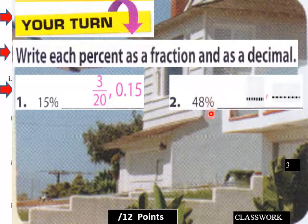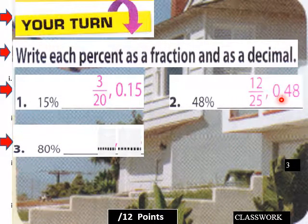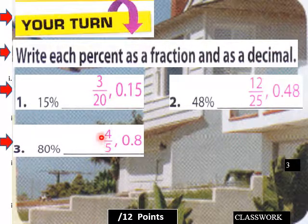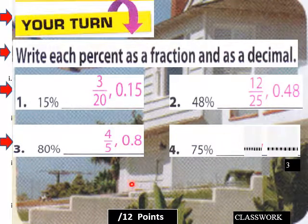48% as a fraction would be 12 over 25, or 0.48 as a decimal. And then 80% as a fraction would be 4 over 5, and 0.8 as a decimal. 75% as a fraction would be 3 fourths, or 0.75.